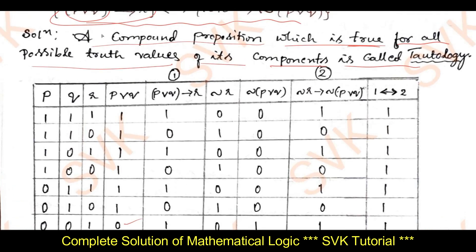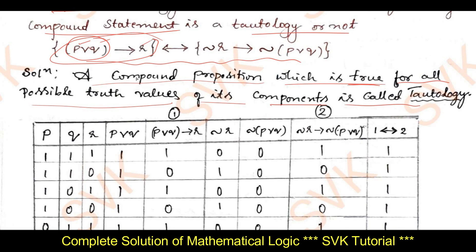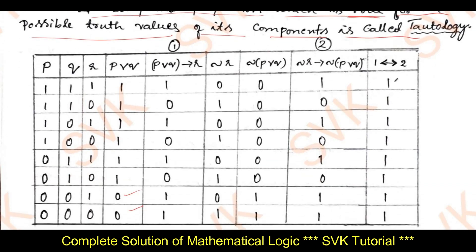Next we compute (p∨q)→r. We should know the definition of p implies q: if p is true (1) and q is false (0), then the answer is false (0). So wherever we have 1 in the p∨q column and 0 in the r column — that is, the combination 1,0 — the result is 0. The rest of the values are 1.